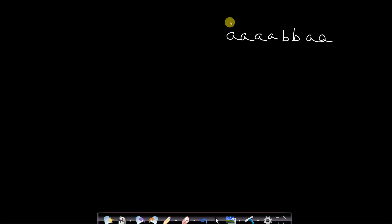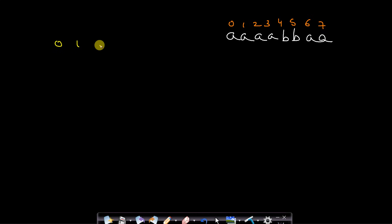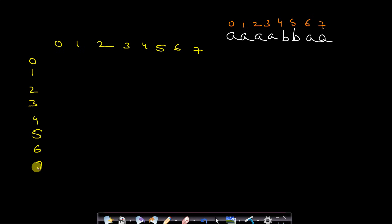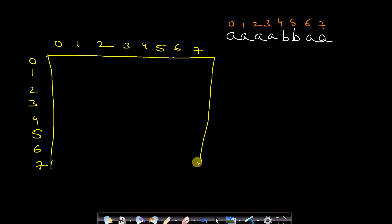Let me give the indices 0, 1, 2, 3, 4, 5, 6, and 7. I will make a table where both the row and column represent indices 0 through 7, corresponding to starting and ending positions. I will explain how and why I am filling this table.